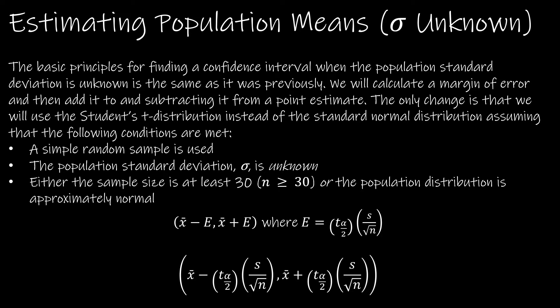Before we begin, remember that we have certain conditions that we need to check. The first condition is that it's a simple random sample and that the population standard deviation is unknown, and that either the sample size is at least 30 or the population distribution is approximately normal. So essentially the same conditions as before except that sigma is unknown.